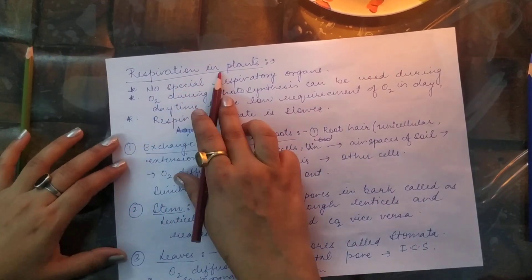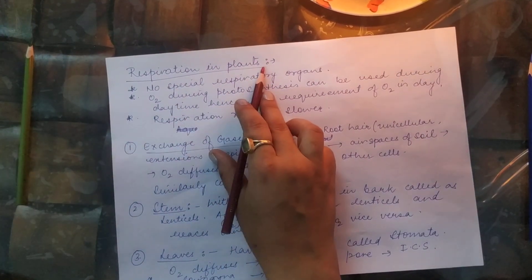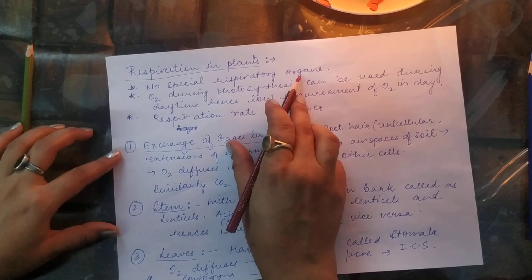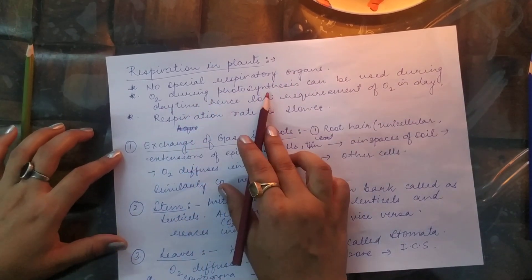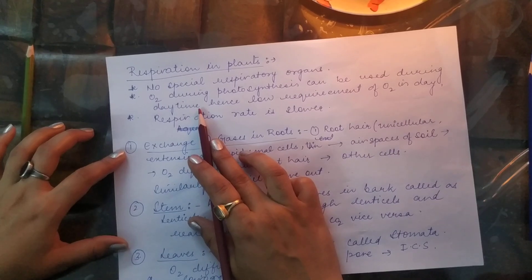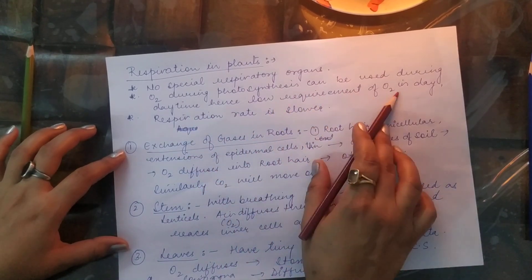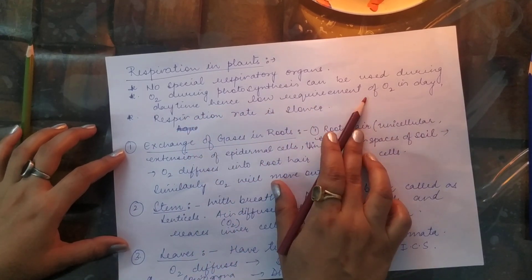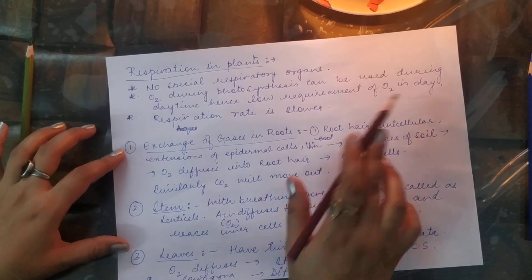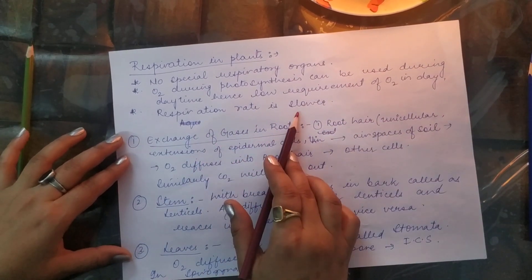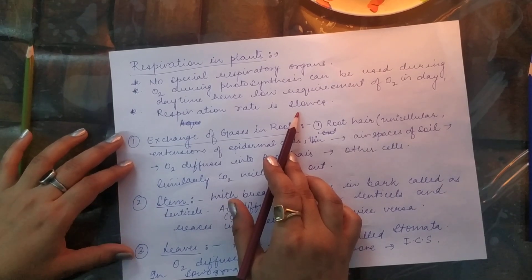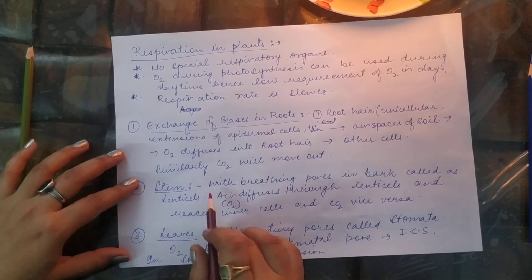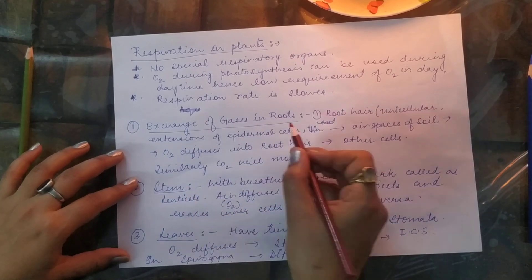Regarding respiration in plants: plants photosynthesize, producing a lot of oxygen, so they don't need a special respiratory organ. The oxygen produced during photosynthesis can be used during daytime, resulting in a low requirement for external oxygen. At night, respiration works similarly to humans — taking in oxygen and releasing CO2. The respiration rate is much slower because most plant components are dead cells.